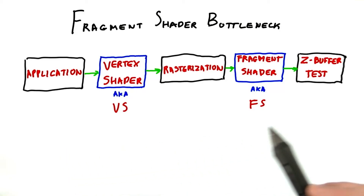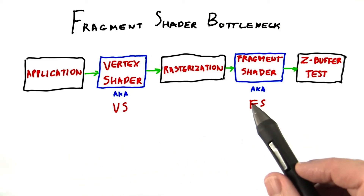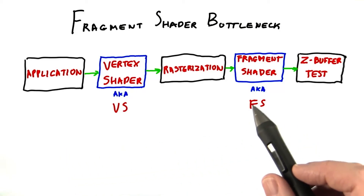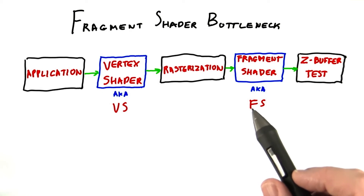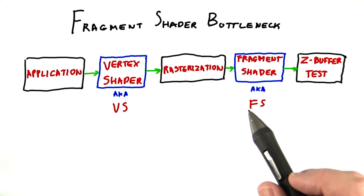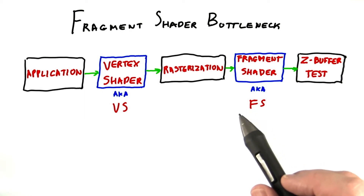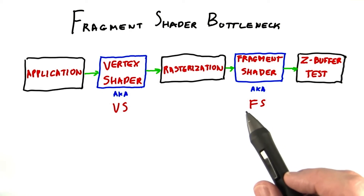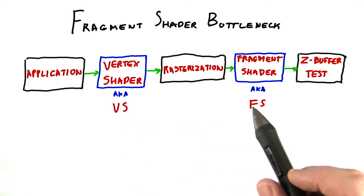Say you're given this pipeline. You're told that the fragment shader is turning out to be a huge bottleneck in this extremely primitive GPU design made by Acme GPUs and Bubblegum Incorporated. Their GPU has a single vertex shader and a single fragment shader processor.